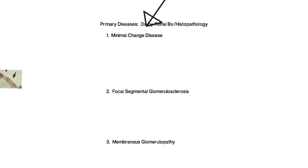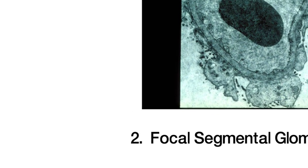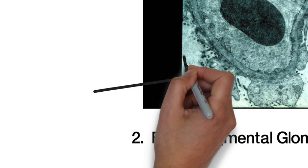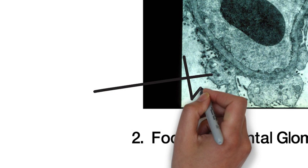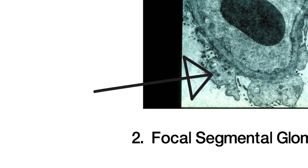The first one being minimal change disease, which is primarily a disease of children, though it does occur in adults and presents with the sudden onset of severe nephrotic syndrome. And on kidney biopsy, light microscopy will be normal and immunofluorescence will be normal, and the only feature is the fusion of the foot processes, which are shown here on electron microscopy.